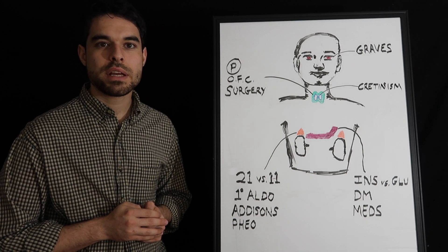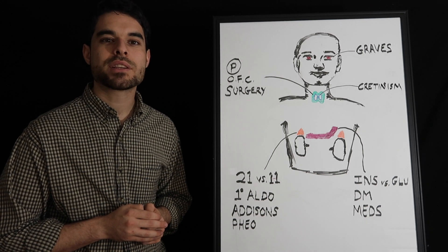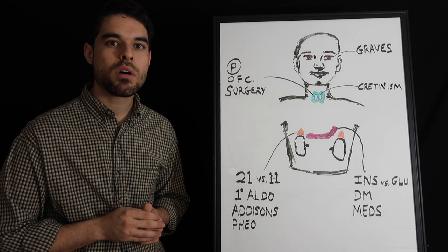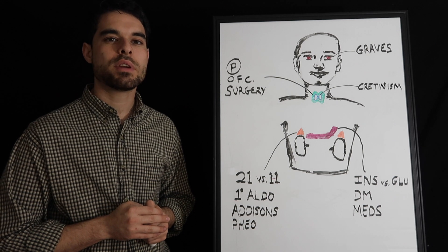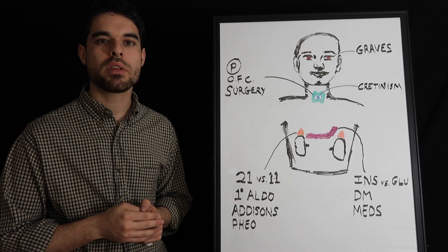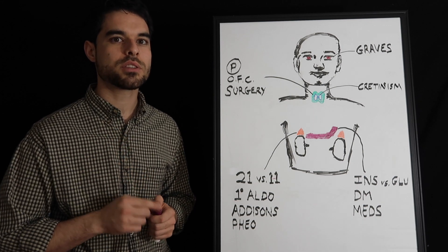Very importantly, with sulfonylureas, you can have disulfiram-like reactions. Which means that if you drink alcohol, you can have this terrible reaction. So if someone's on a sulfonylurea, if you have a diabetic patient drinking alcohol that gets a terrible reaction, think sulfonylureas.